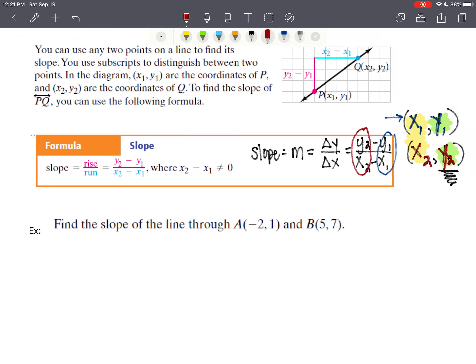If I start with y₂ in the numerator, I have to start with x₂ in the denominator, so that these two values are the ones that correspond to one another, and these two values are the ones that correspond together. So we're going to find the slope through the two points, negative 2, 1, and 5, 7.